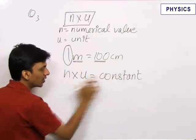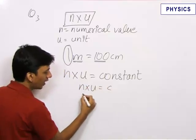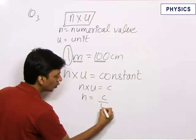So, the product of n into u always remains constant. Let it be some c. Therefore, n is equal to c upon u.